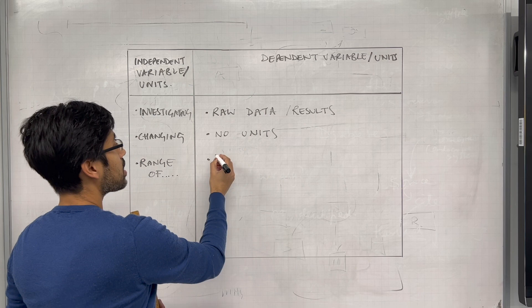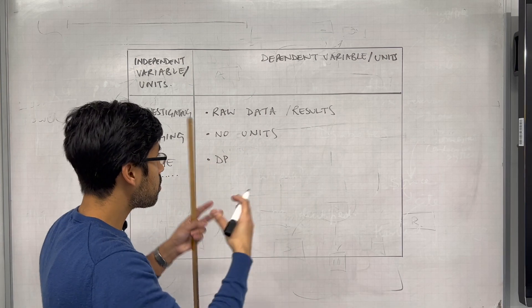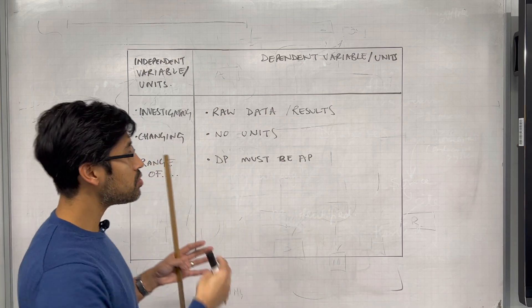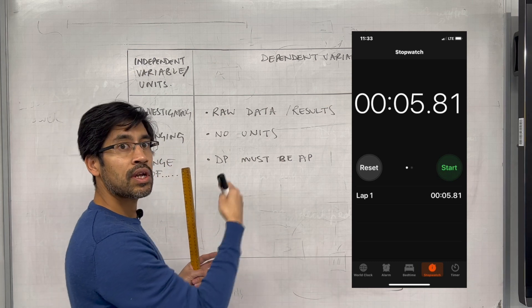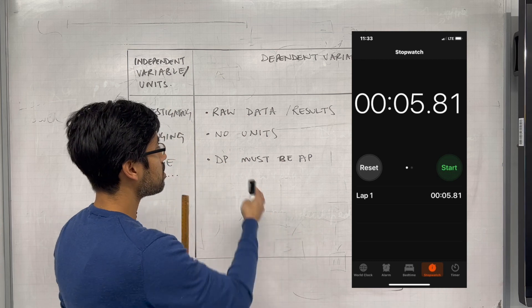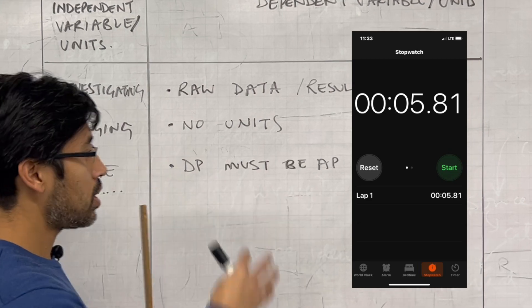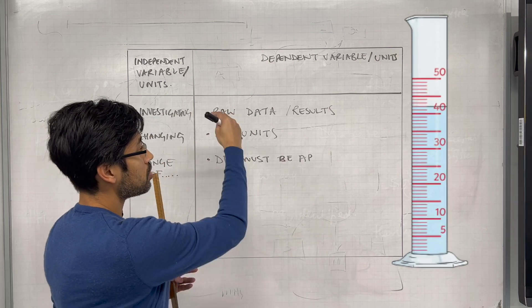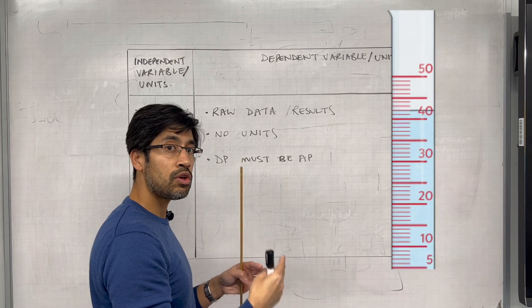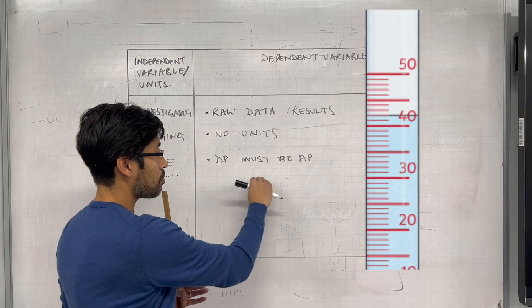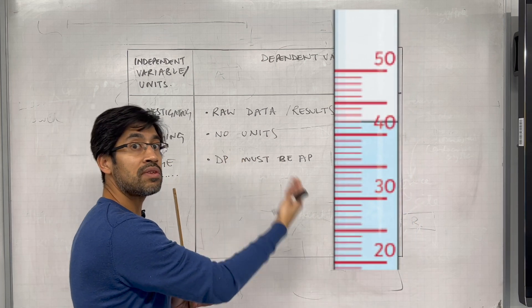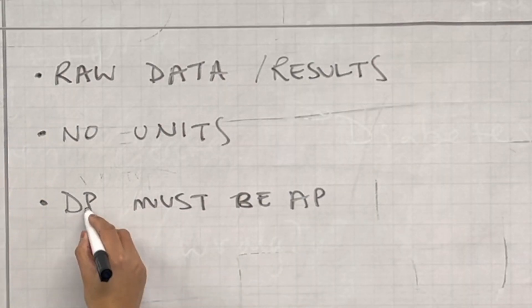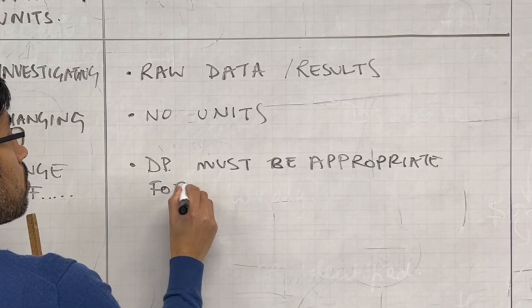No units, and we must record the decimal places — the decimal places or magnitude of the number must be appropriate for the device that you're using. So if you're using a stopwatch and you're recording time, if the stopwatch has two decimal places, you can't round that up yourself — you have to record the numbers that it says on the stopwatch. If you've got a measuring cylinder and you can read it to 0.5 of a centimetre cubed, you can't round that up for convenience. You must record according to the accuracy or precision of the device you're using.